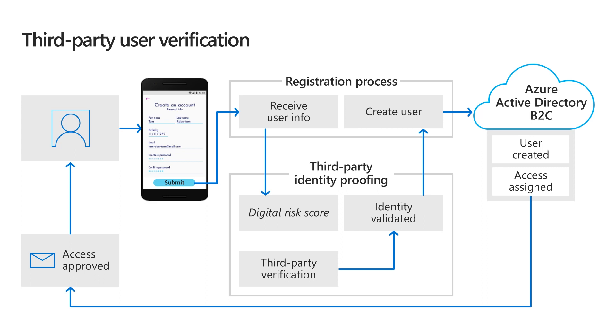For example, if I'm a government, I might want to verify the user's driver's license, so that only citizens of my state can create an account in my application. Similarly, I might need to verify a loyalty number, a contract ID, a membership, or the user's existence in a database, before allowing them to create an account.